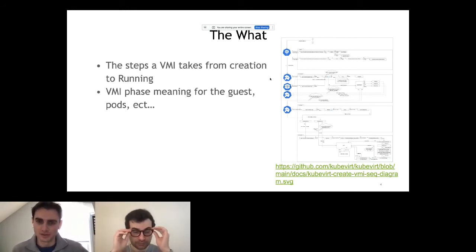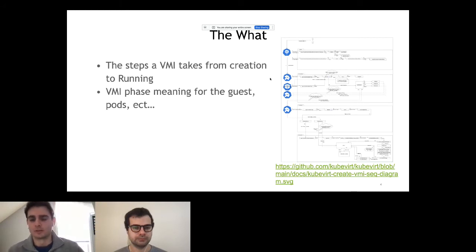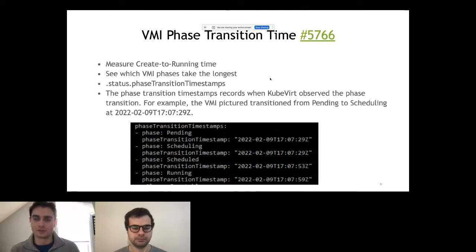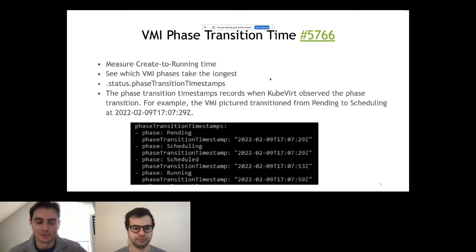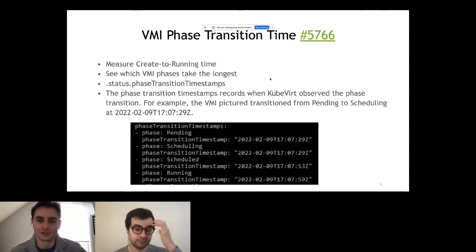If we wanted to discuss specific parts of the codebase or areas we thought were slow or had issues, we'd refer to this diagram. Now we understand what's going on with the phases, so let's see what else we can do. We wanted to actually measure this, and this was some cool community work: we wanted to measure the create-to-running time of VMIs. We came up with a pull request that added a feature so we could measure this and export the data to Prometheus to create dashboards around it. We also wanted to see how long specific phases took.